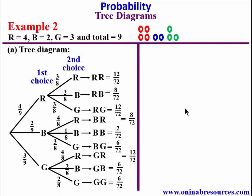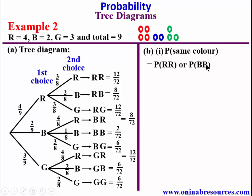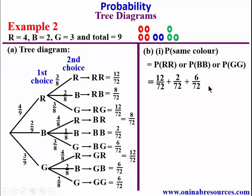Then we go to Part B of the question. For B1, the probability of picking the same color will be red-red, or blue-blue, or green-green. That is 12/72 plus 2/72 plus 6/72. So 12 plus 2 plus 6 gives 20/72, which in simplest form is 5/18.